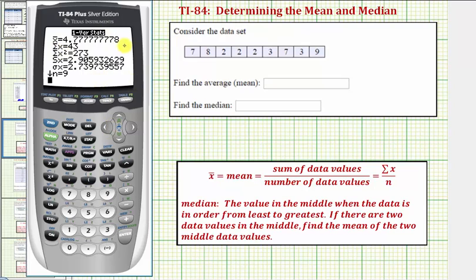X-bar is the mean. Rounding to two decimal places, the mean or average is approximately 4.78.